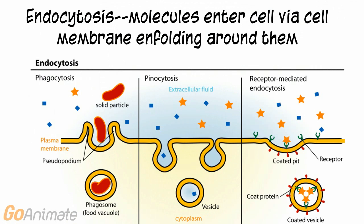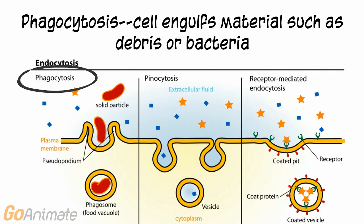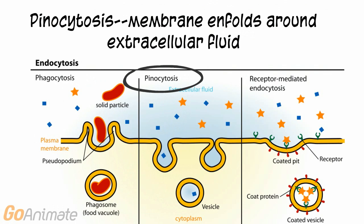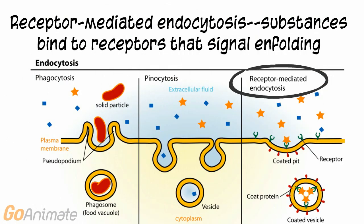There are different kinds of endocytosis. In phagocytosis, the cell engulfs material such as debris or bacteria. In pinocytosis, the membrane unfolds around extracellular fluid to bring it into the cell. In receptor-mediated endocytosis, substances attach to membrane receptors that signal the cell membrane to enfold around the substance. We hope you have learned something about cell transport and see you next time!